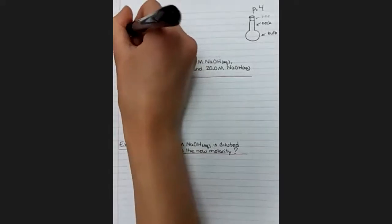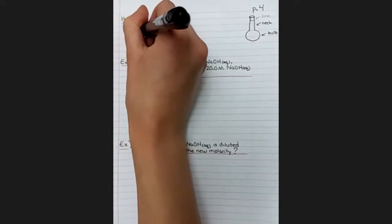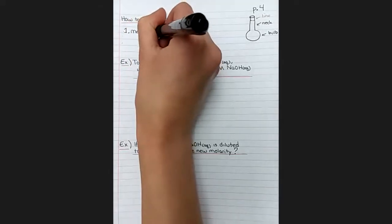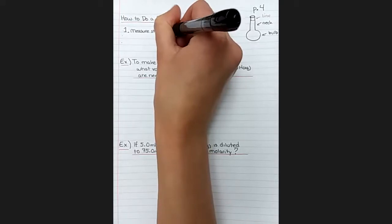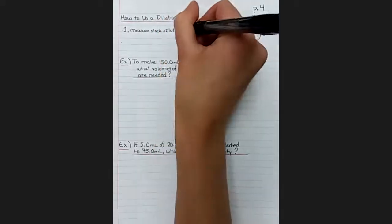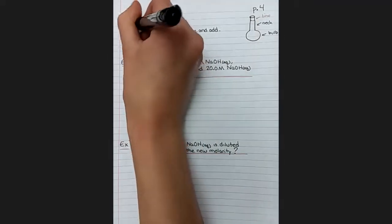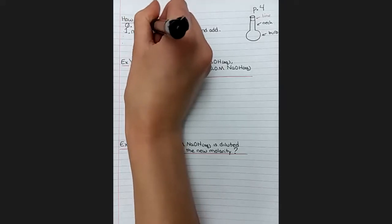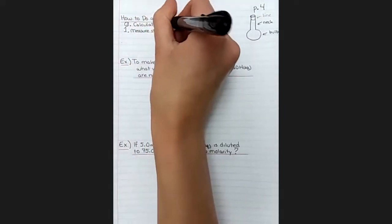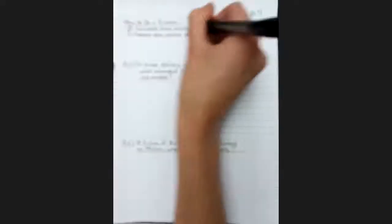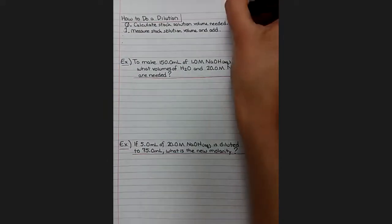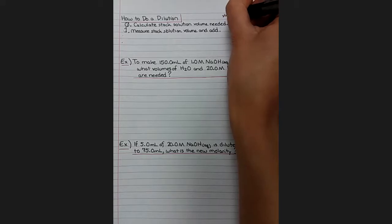So the important steps of doing a dilution after the calculation is to measure out your stock solution volume and add it. I guess we need to add step zero. Step zero, math, calculate stock solution volume. So calculate how much stock solution you need, then measure it in some sort of precise glassware, and put that in.